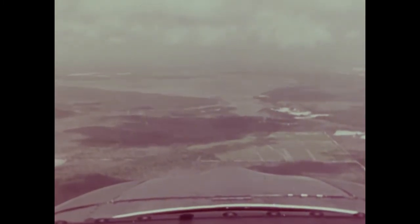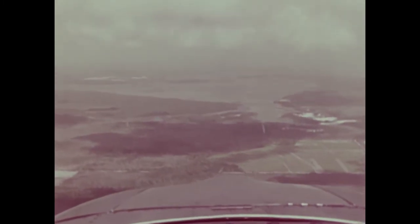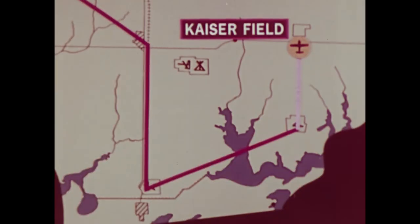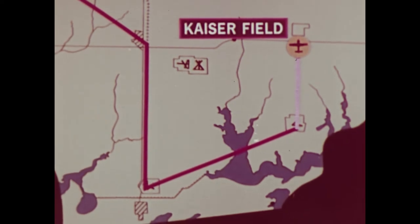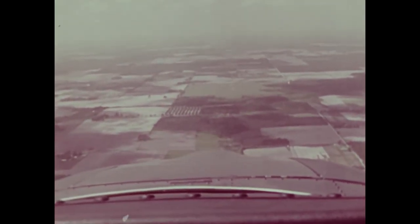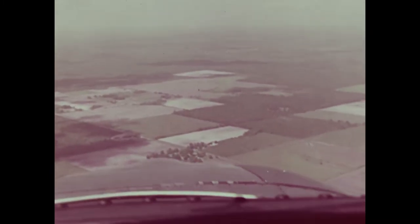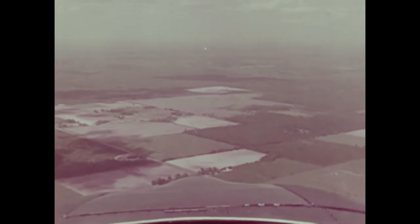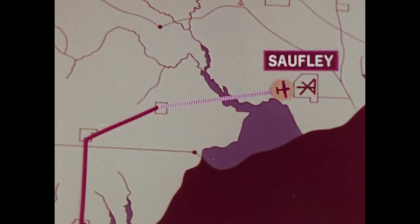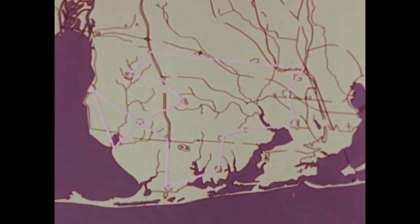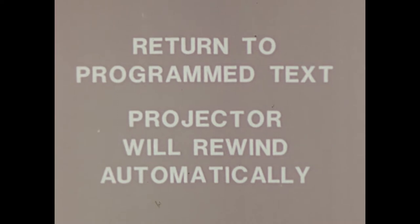On an easterly heading from Canal Field is Wolf Bay. To the east of Wolf Bay is Wolf Field — the last T-34 touch and go field. Five miles due north of Wolf Field is Kaiser Field, another grass emergency landing practice field with an altitude restriction of 2,000 feet. To the east of Kaiser is Faircloth Field — a closed grass field with no altitude restriction. To complete the circuit of our training area, we head toward Perdido Bay and finally Softley Field. This completes the unit on T-34 local course rules.